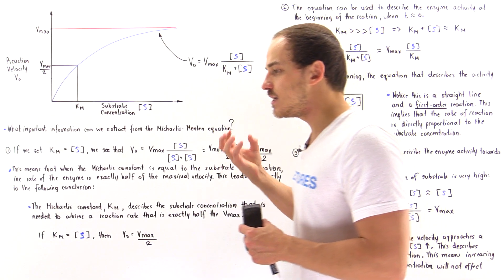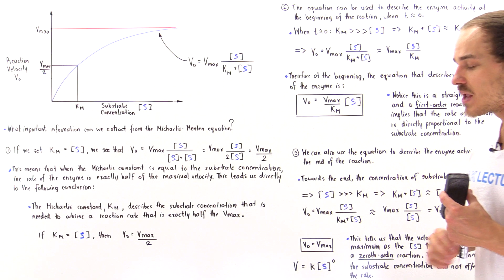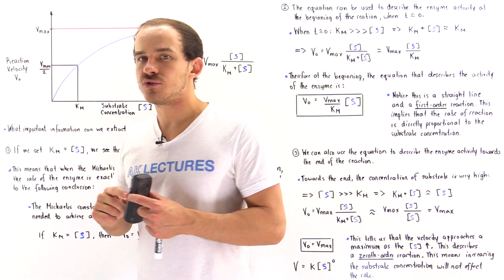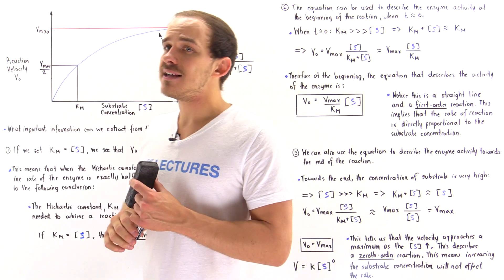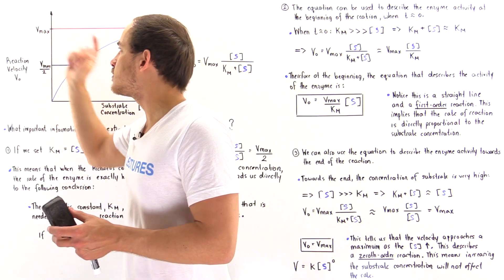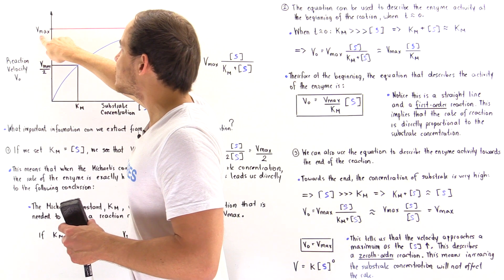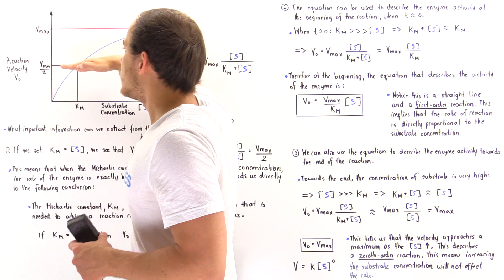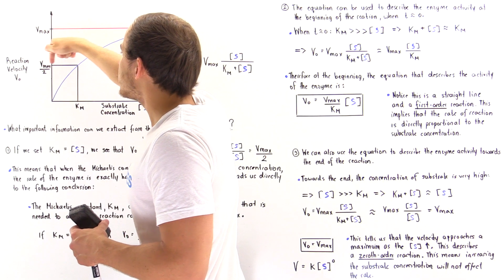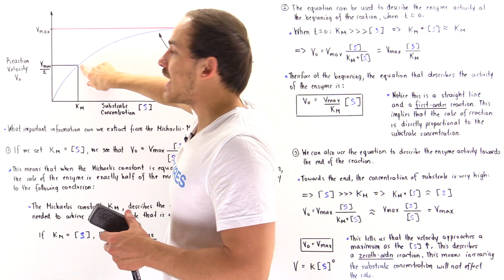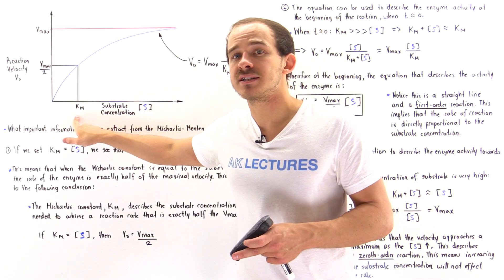We simply have V0 equal to Vmax divided by 2. This carries very important physiological meaning. When the Michaelis constant equals the substrate concentration, the rate of that enzyme is exactly half of the maximum velocity. So on the Y axis, Vmax divided by 2 is halfway between zero and Vmax. Drawing that horizontal line to where it touches the curve, then dropping a vertical line down, gives us the X coordinate known as the Michaelis constant, KM.